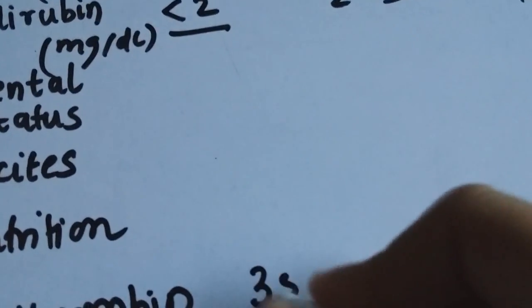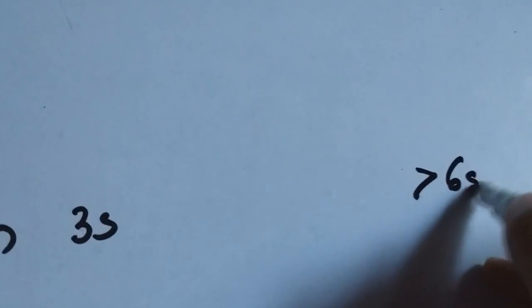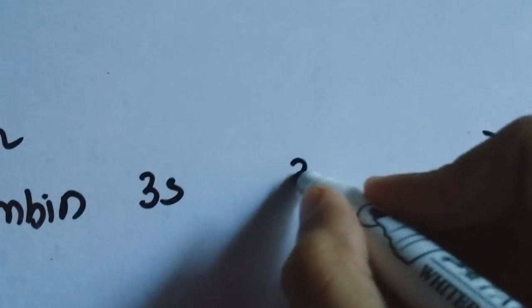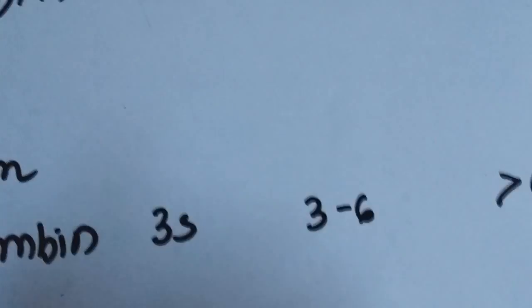6 actually works in with the prothrombin time, because if the prothrombin time delay is up to 3 seconds, then you give 1 point. If it is greater than 6 seconds, then you give 3 points. And if it's anywhere between 3 and 6, then you give 2 points.